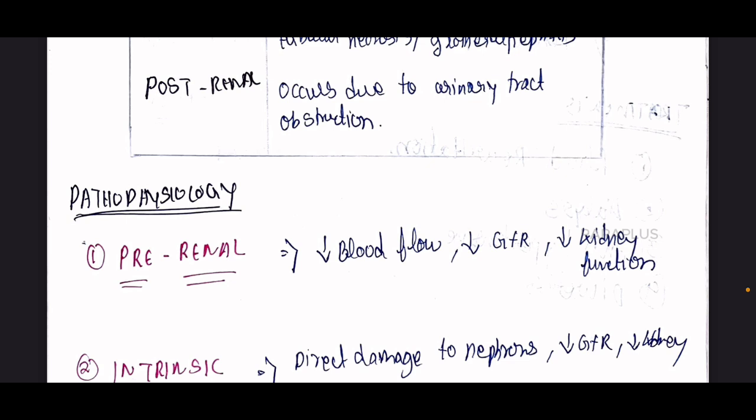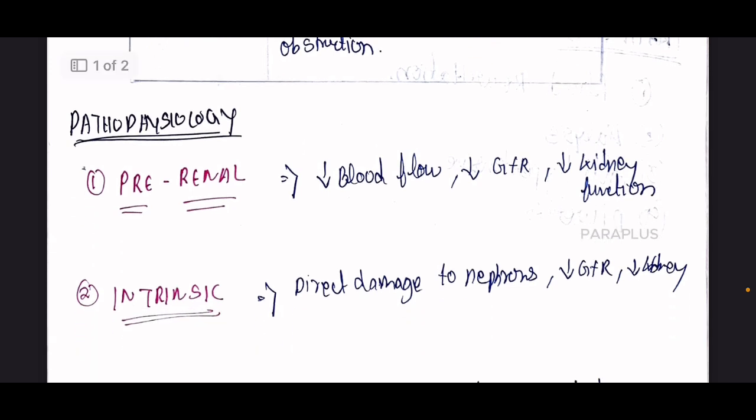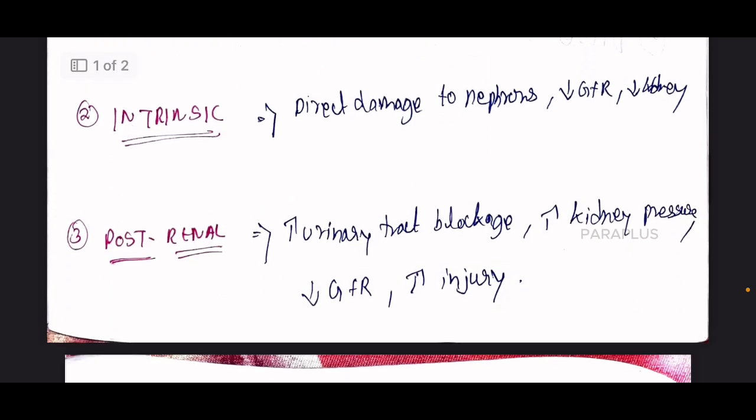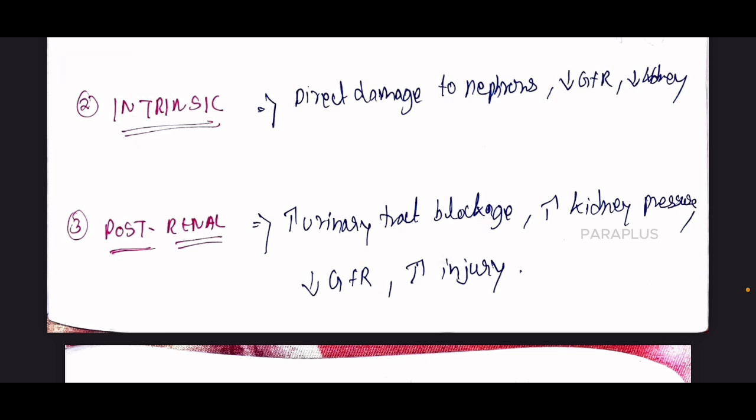As a result, the nephron receives less oxygen, filtration capacity decreases, and GFR — glomerular filtration rate — is reduced. If blood flow dependency continues, kidney function is reduced. Fluid accumulates, pressure builds, and if the nephron is damaged like a blocked filter, GFR and filtration rate are further reduced.